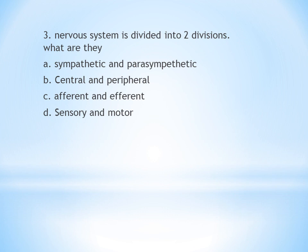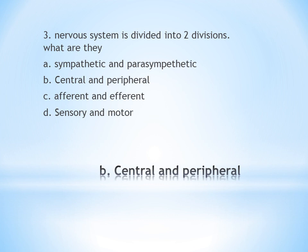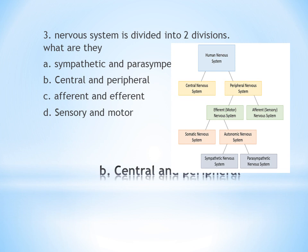Question number 3: The nervous system is divided into two major divisions. A. Sympathetic and Parasympathetic. B. Central and Peripheral. C. Afferent and Efferent. D. Sensory and Motor. The answer is B — Central and Peripheral. Sympathetic and Parasympathetic are divisions of the autonomic nervous system.